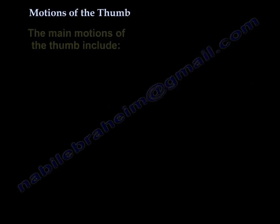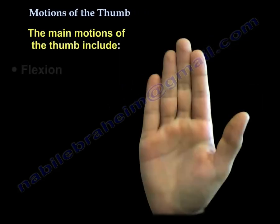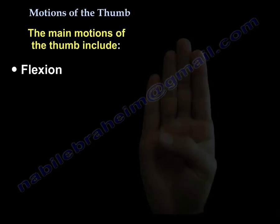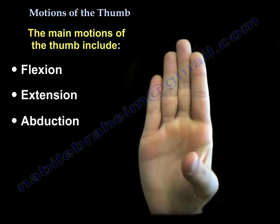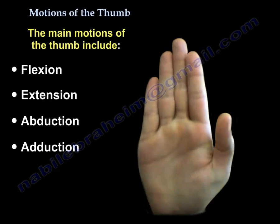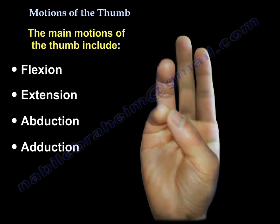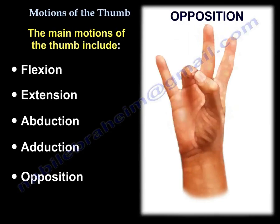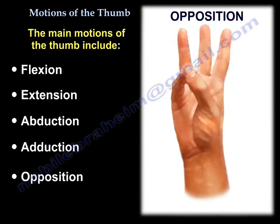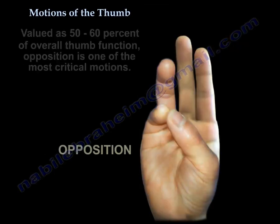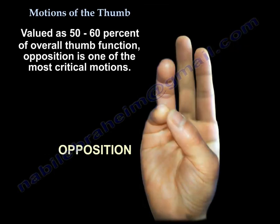The main motions of the thumb include flexion, extension, abduction, adduction, and opposition. Valued as 50-60% of overall thumb function, opposition is one of the most critical motions.